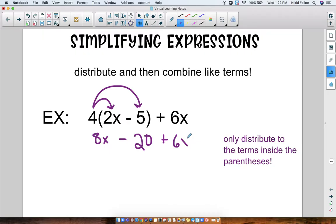We don't multiply it with the 4, we leave it by itself. Okay, now I can combine like terms. In this problem I have 8x minus 20 plus 6x. Well, 8x plus 6x are like terms. 8x plus 6x is 14x, and I can't combine that with minus 20 because 14x and 20 are not like terms. So this is as simplified as I can go, this is my answer.